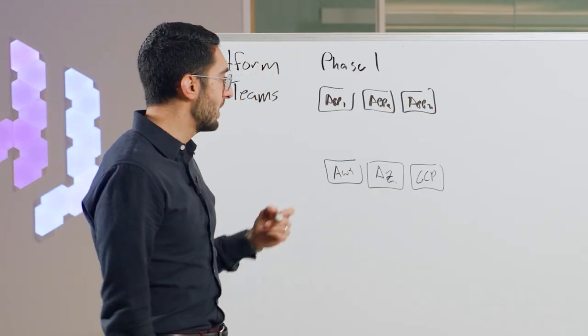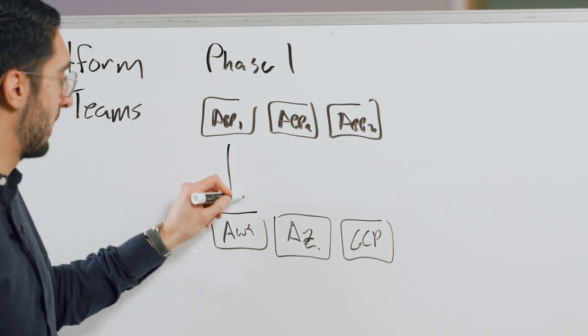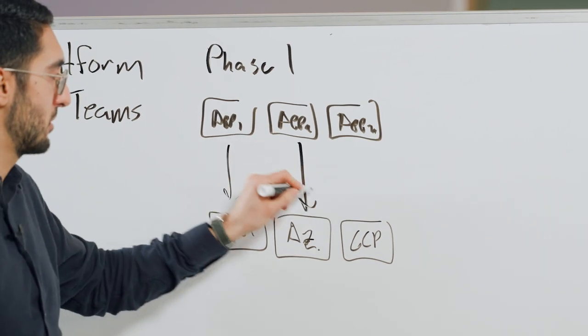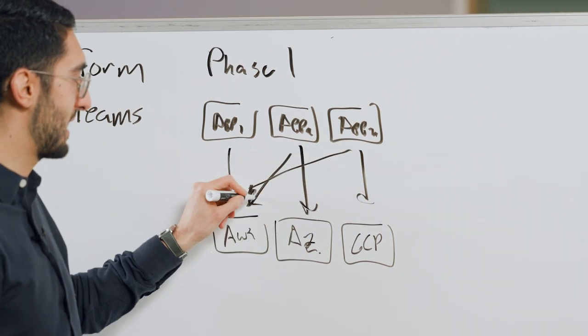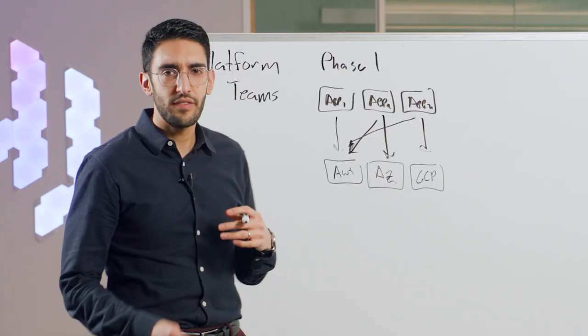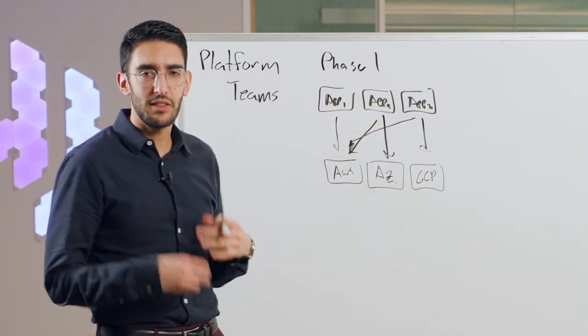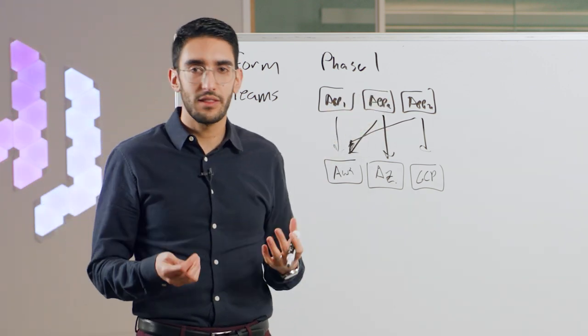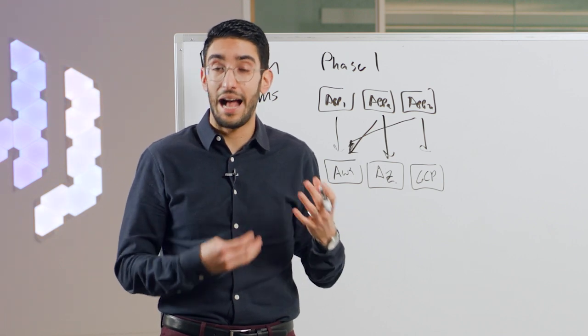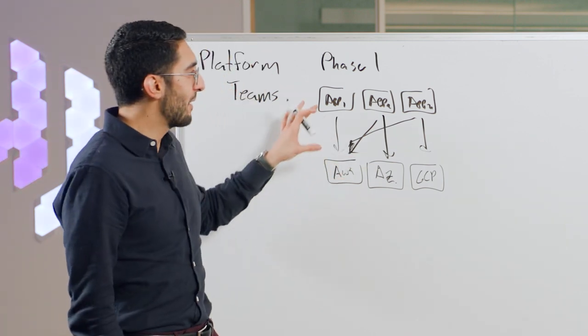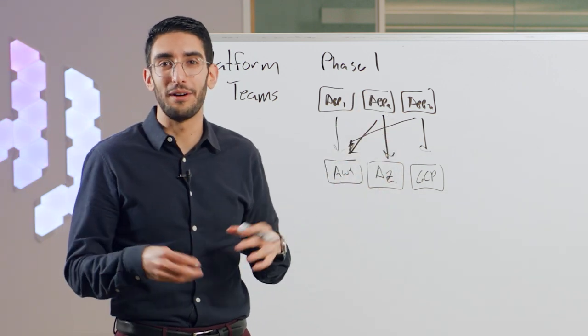And in this kind of phase one, it's a very ad hoc or random approach, meaning app team one might be all in on Amazon, app team two is picking and choosing, app team three is building something themselves. It's this sort of chaotic approach where each team is picking their own tooling, approaching it their own way, building their own pipelines, building their own process for how they're adopting cloud. And we see this very, very often. We've called this sort of phase one or cloud 1.0.